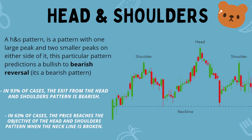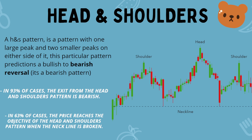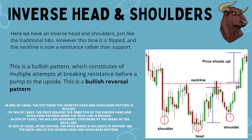First up we've got the head and shoulders pattern. This is a pattern with one large peak and two smaller peaks on either side — you've got the head, the left shoulder, and the right shoulder. It's important that you have a completely horizontal neckline as your support line. This is a bearish reversal pattern. You may have had a good uptrend, then you go into a shoulder, into a head, into a shoulder, and then you lose support at the neckline, signaling a potential downtrend. In 93% of cases the exit is bearish, and in 63% of cases the price reaches the objective — measured by taking the depth from the neckline to the head and projecting it downward.